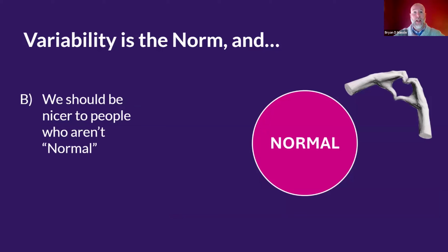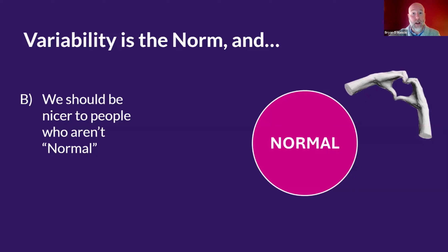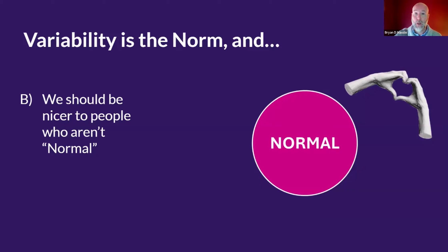Our second category is: variability is the norm, and we should be nicer to people who aren't normal. This comes from a good place — being nice is definitely better than not being nice. But as you can see in the image, what this does is draws a circle of normality. Normal falls within that circle, and then we have hands making a heart symbol — we should be nice to those outside the circle. What this tends to mask is that many of those same emotions about those inside versus outside the circle of normal are still there. The very idea that we need to advocate for niceness to those outside shows this isn't people we view as being on equal footing.